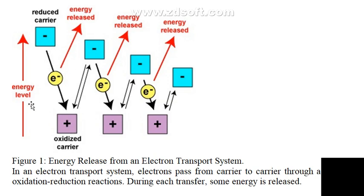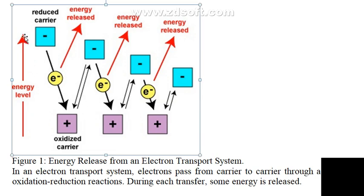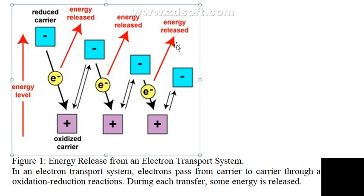When a reduced carrier donates its electron, it becomes oxidized and releases energy. The electron passes to the next carrier, which becomes reduced, and energy is released again. Then that carrier becomes oxidized as it passes the electron to a third carrier. In this sequential way, energy is continuously being released throughout the chain.